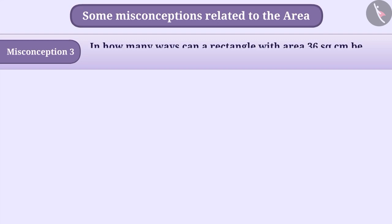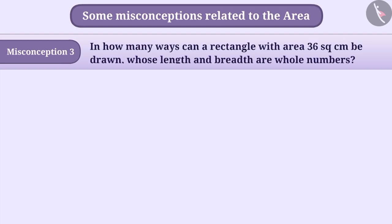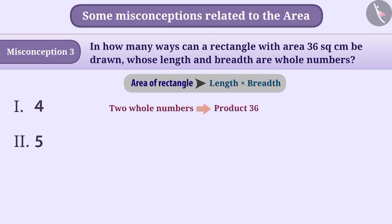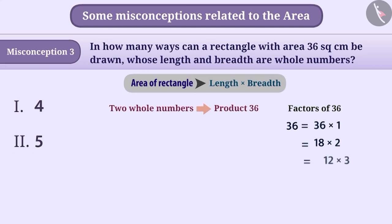Misconception 3: In how many ways can a rectangle with area 36 square centimeters be drawn, whose length and breadth are whole numbers? We know that the area of a rectangle equals length × breadth, so we need to find two whole numbers whose product is 36. Writing the factors of 36: 36×1, 18×2, 12×3, 9×4, 6×6 — giving us 5 pairs of numbers.